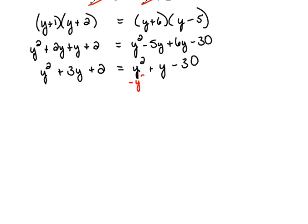So let me subtract y squared so we can remove it from this side. And look what happens when we do it—it actually removes it from both sides, doesn't it? So we have left 3y plus 2 equals y minus 30.